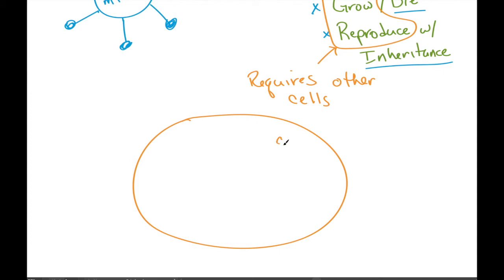So if we have the cell, the virus interacts with the surface of the cell. And for example, in the case of a coronavirus,